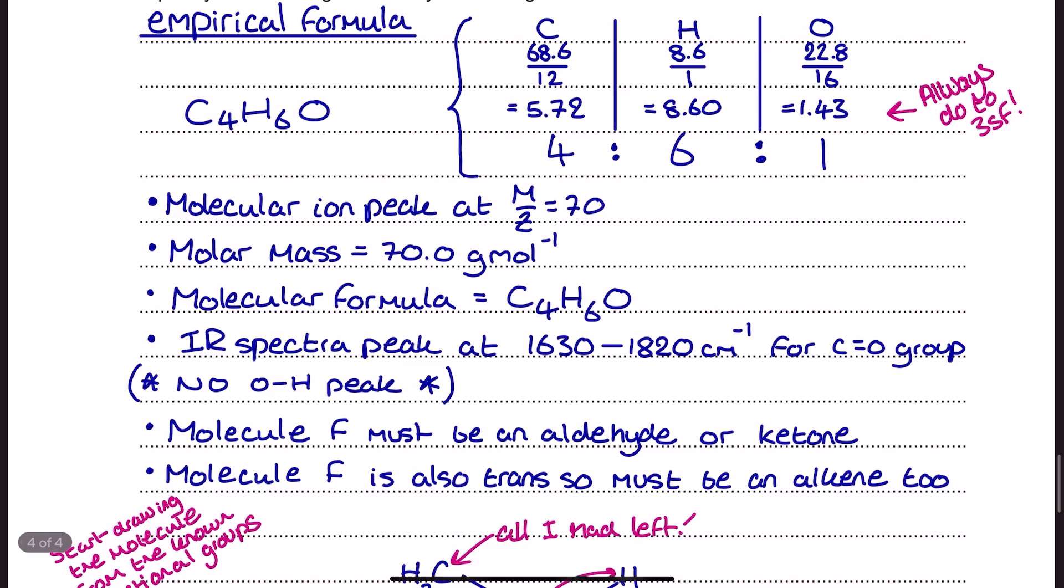The molecular ion peak, as I mentioned, is at 70. So that means my molar mass is 70 grams per mole. And that means that since my empirical formula molar mass was 70, my molecular formula is identical to the empirical formula. So I'm going with C4H6O here.